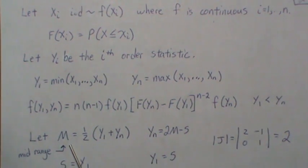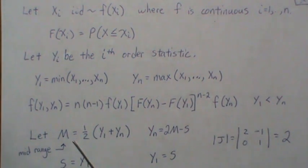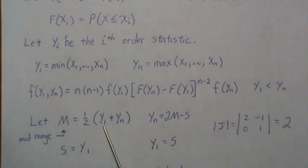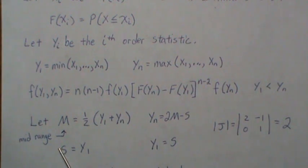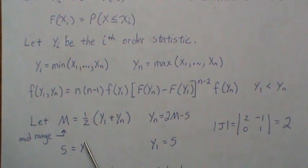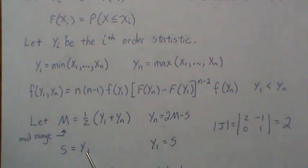The mid-range statistic M is the mean — the average — of the largest and smallest values in our sample. Our goal is to find the distribution of M. When mapping two variables, we need to map to two variables, so we create a dummy variable S, find the joint distribution of both M and S, and then integrate out S, leaving just the marginal distribution of M. We back-solve for Y_1, which is straightforward.